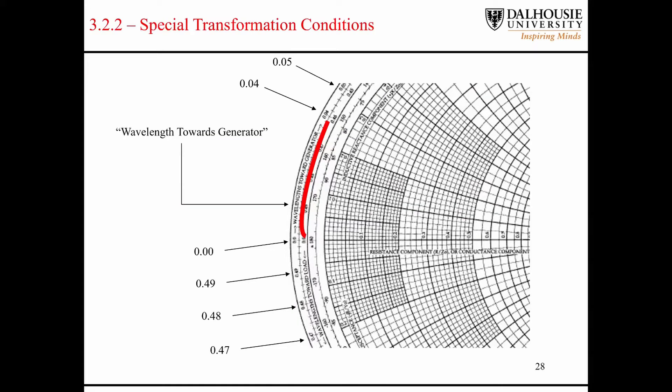So I reproduced the markings on the Smith chart in my PowerPoint here. So this is the zero point. It corresponds to the case where the load is short-circuited, like I mentioned before. You can see here that there's these arrows kind of pointing clockwise, and the text here that's underlined in red says, Wavelengths Toward Generator.